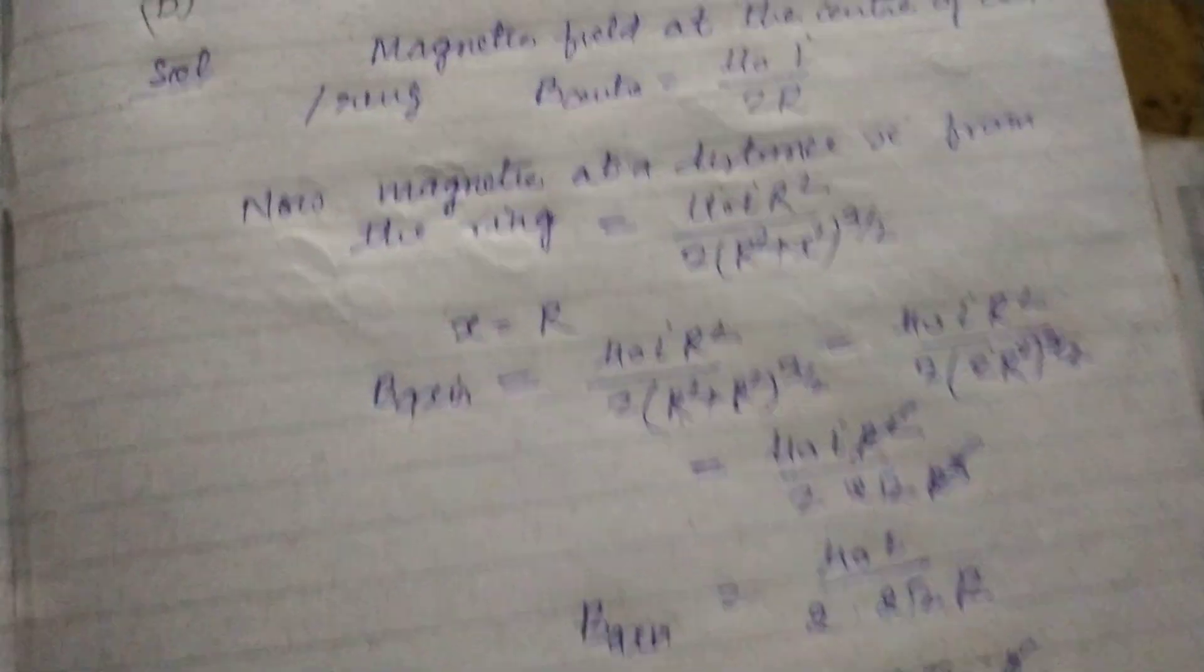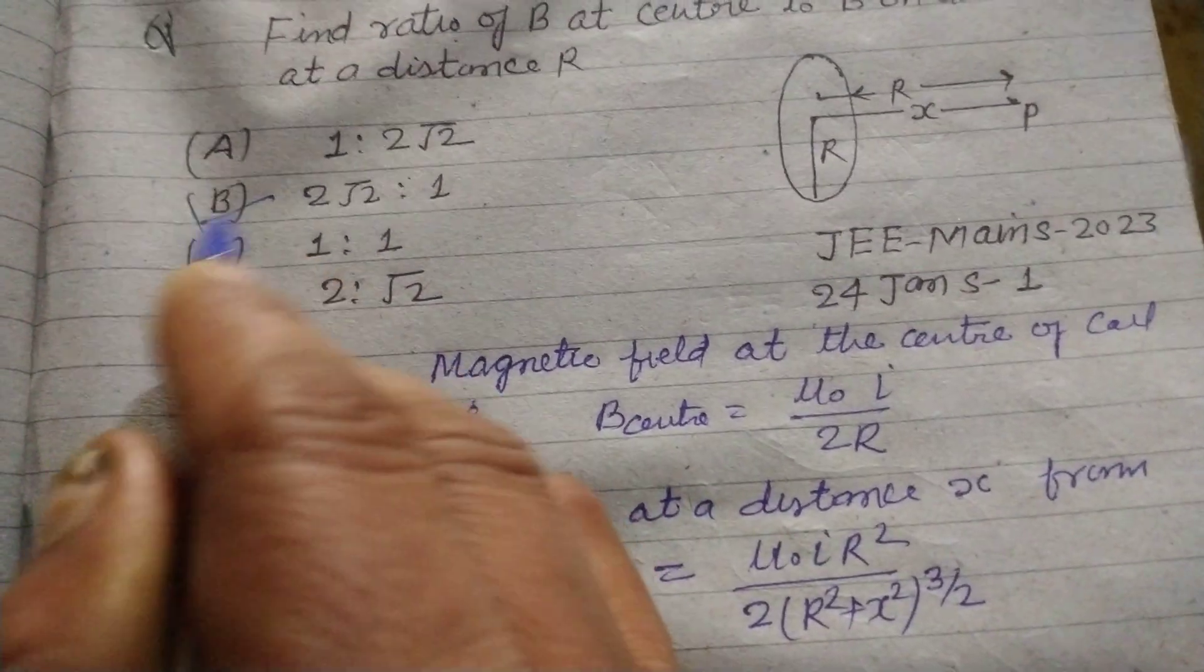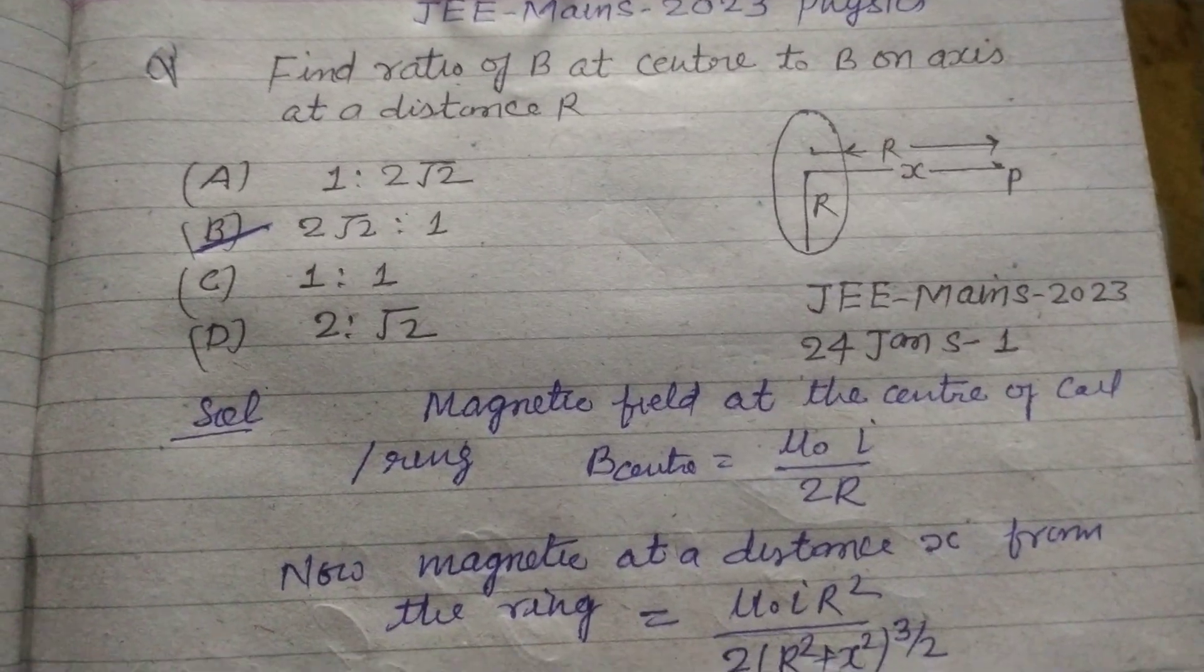So this is the answer, 2√2 ratio 1, which is found in option B of this question. So students, I hope you got it.